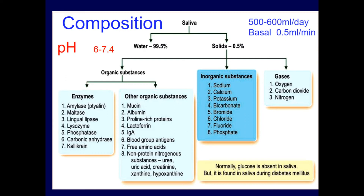Saliva is made up of 99.5 percent water. Within this water exist certain solids — some organic, some inorganic, and some gases. The significant organic components include proteins that work as enzymes, such as amylase, maltase, and lingual lipase, as well as lysozyme. The presence of amylase and lipase means carbohydrate and fat digestion are initiated in the mouth, but since no protease is present, protein digestion does not begin at the level of the oral cavity.